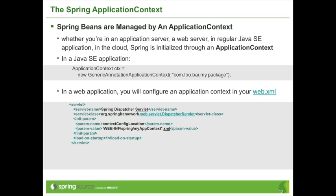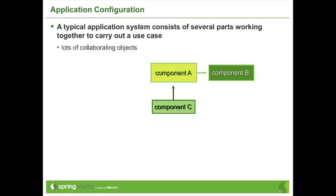Getting back to the idea that objects have collaborations and dependencies: imagine three classes with the very descriptive names Component A, Component B, and Component C. Component B needs a reference to Component A — so we say Component A is being injected into Component B. Similarly, Component A needs a reference to Component C — so Component C is being injected into Component A. This is something the Spring framework manages for you.